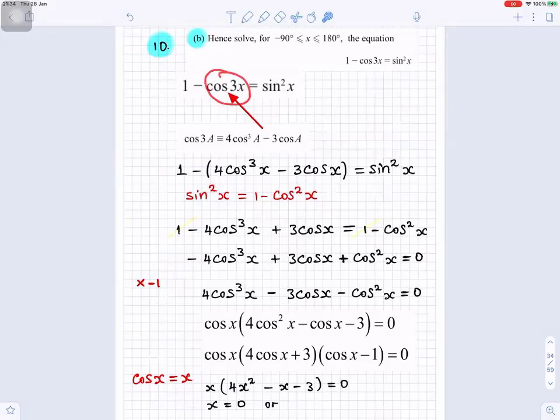We replace cos3x with 4 cos³x minus 3 cosx. So, you will get 1 minus 4 cos³x minus 3 cosx equals sin²x. But sin²x is 1 minus cos²x, so we replace that sin² with 1 minus cos².